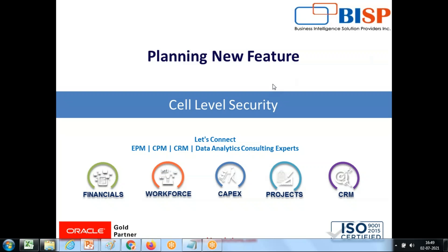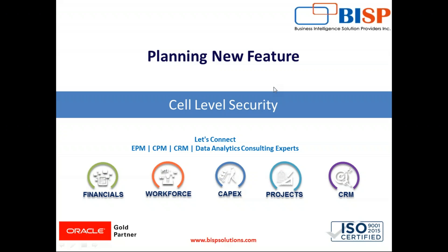Hello friends, and once again welcome to baspsolutions.com. My name is Amit and today I'm going to show you another new feature of Oracle APM Planning. This feature is called cell level security. It's one of the most requested features and was launched in March 2021. It lets you define access to individual dimension member intersections.